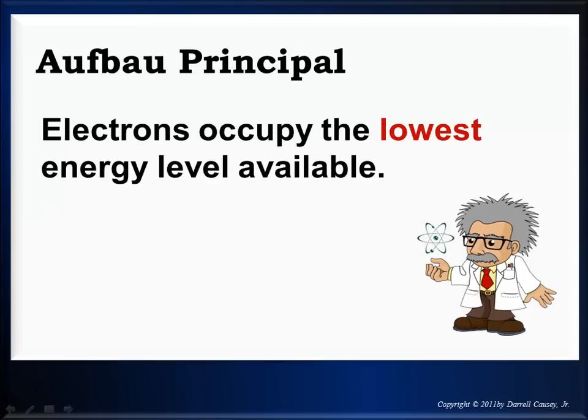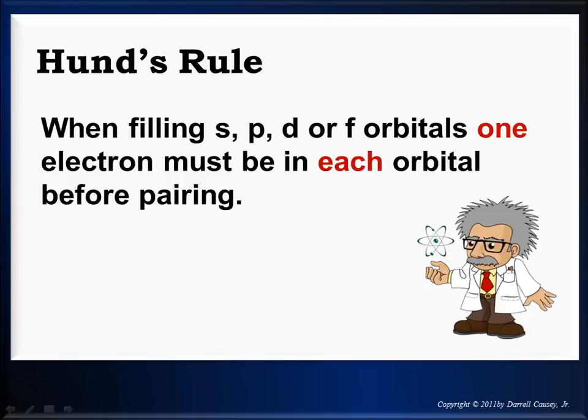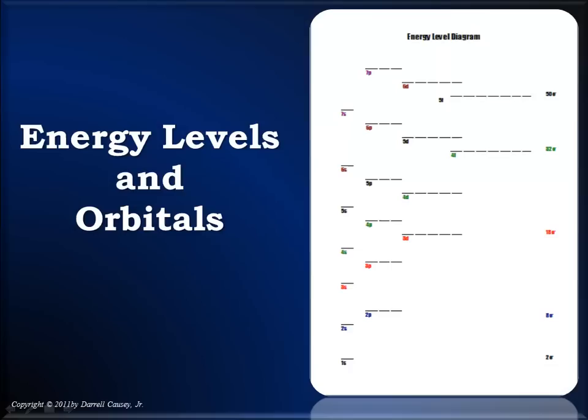You need to know the Aufbau principle. Electrons occupy the lowest energy level available. And Hund's rule which tells us when filling the p, d and f's, s's only have 1 orbital so it really doesn't matter. 1 electron must be in each orbital before pairing. And so there's a p orbital and we're going to put 1 in each one. Now we can pair. Don't forget that. Hund's rule.